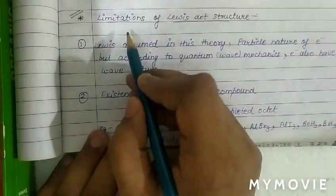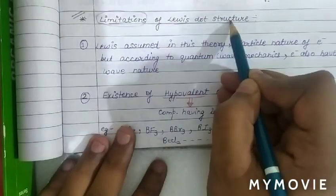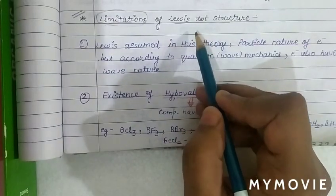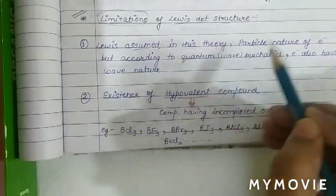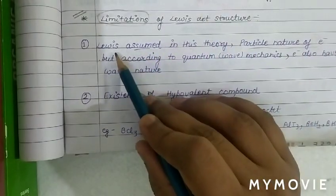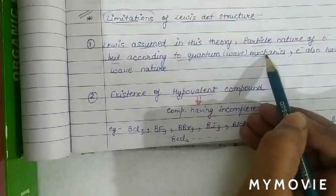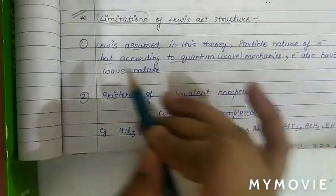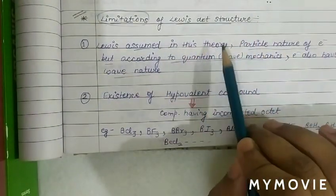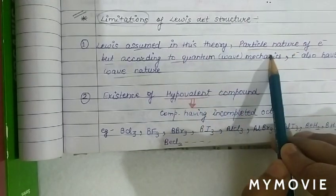In today's class we are going to discuss the drawbacks or limitations of Lewis dot structure. The first limitation is that Lewis assumed particle nature of electron in this theory, but according to quantum mechanics, electrons also have wave nature.